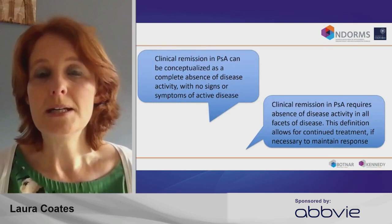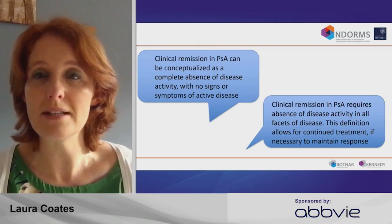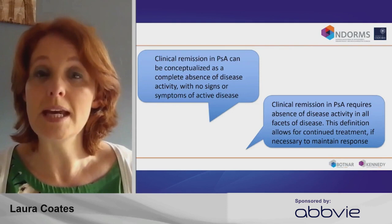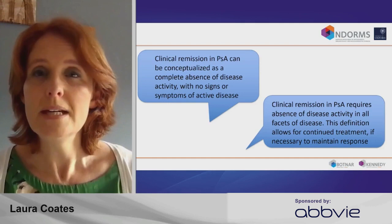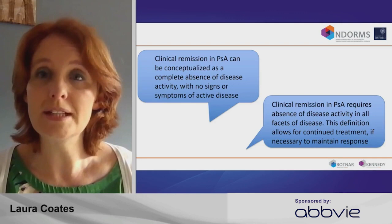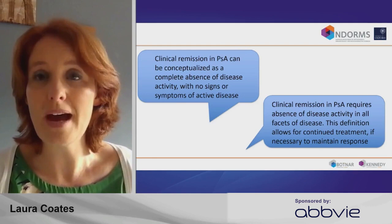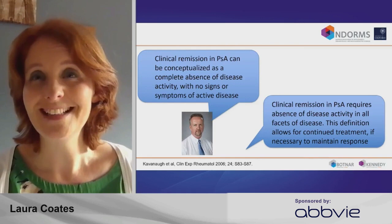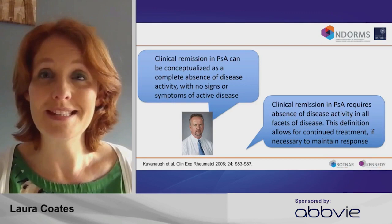I think you can argue for a number of those definitions, but this is the one I first looked at when we were developing outcome measures in psoriatic arthritis and have used as a benchmark moving forward. Clinical remission in PsA can be conceptualised as a complete absence of disease activity with no signs or symptoms of active disease, and it requires that to be true across all domains. In my clinical practice, this definition would allow for continued treatment — we can talk about drug-free remission, but I'd also include patients in remission on ongoing treatment if required. That comes from a paper by Artie Kavanagh and Jarp Fransen from 2006.